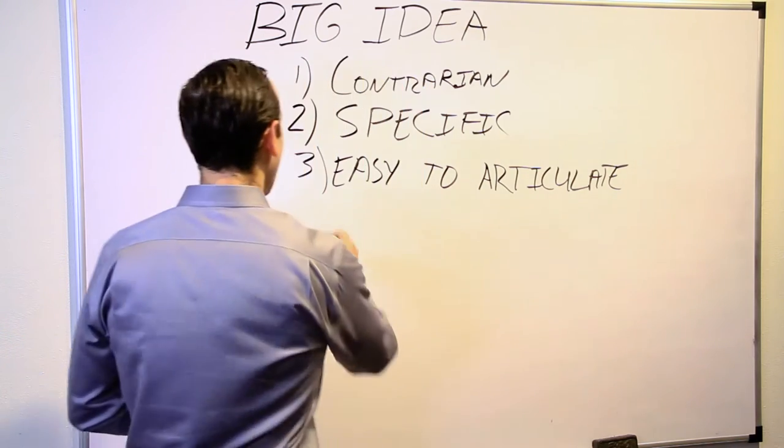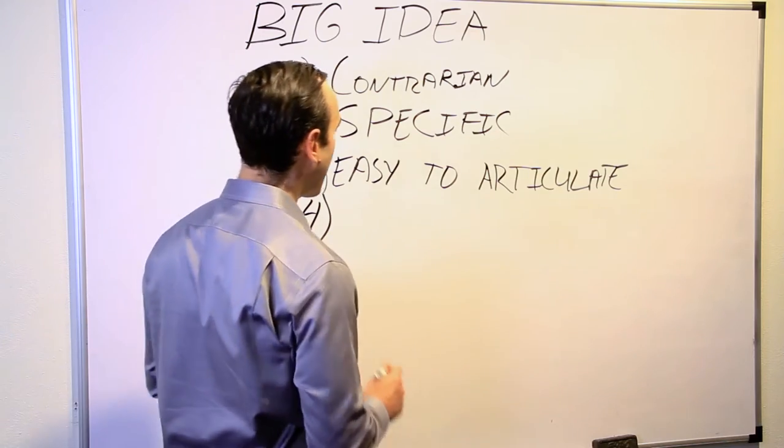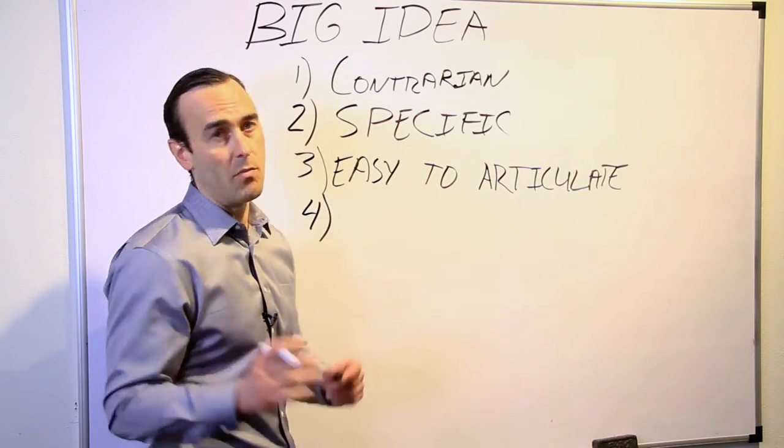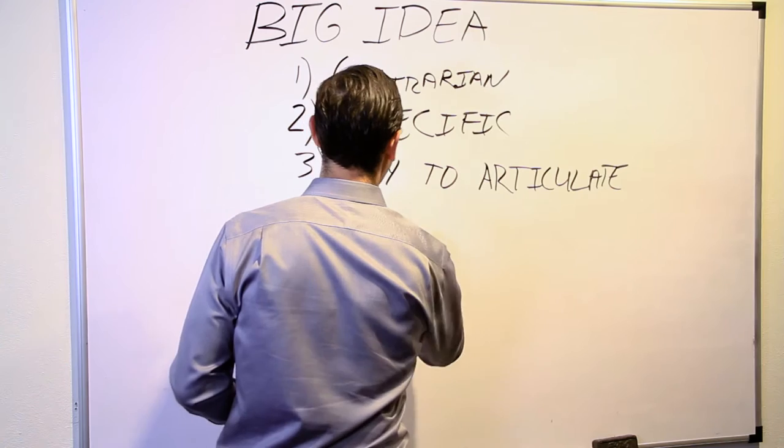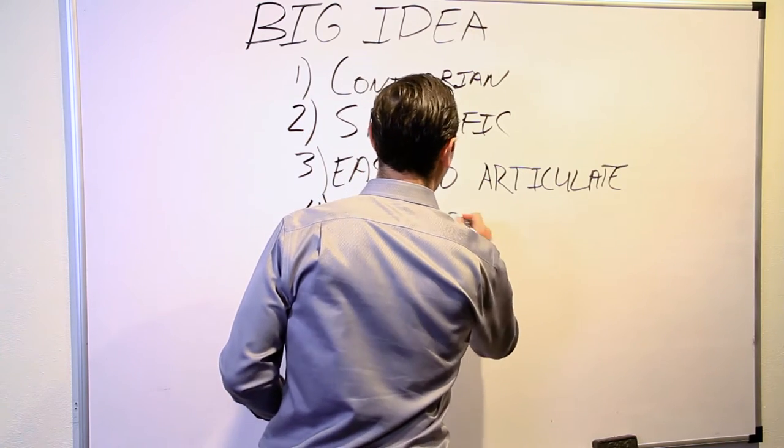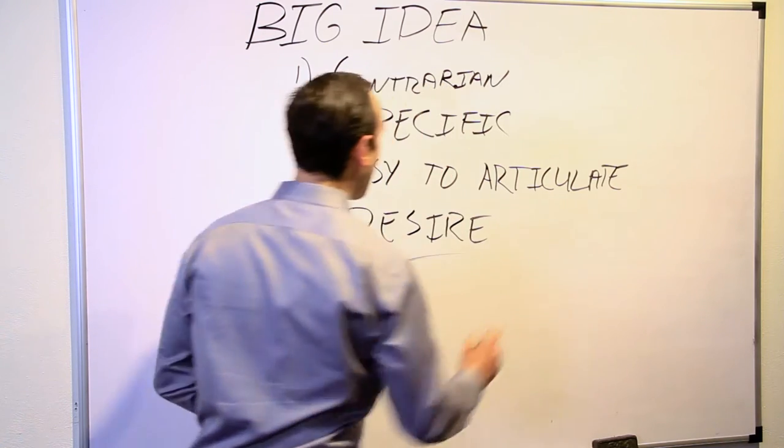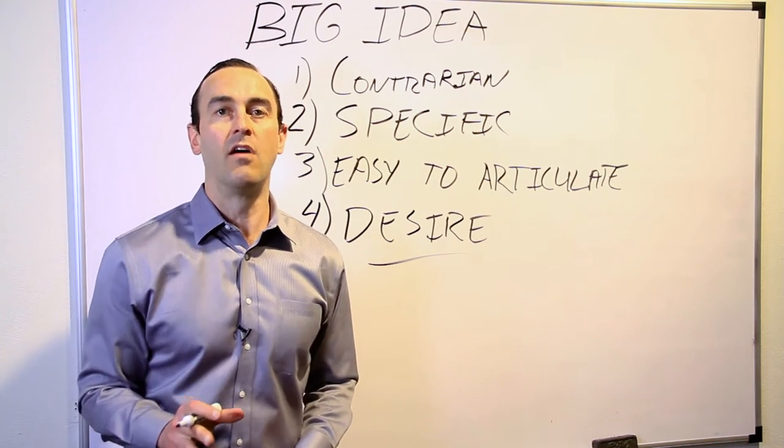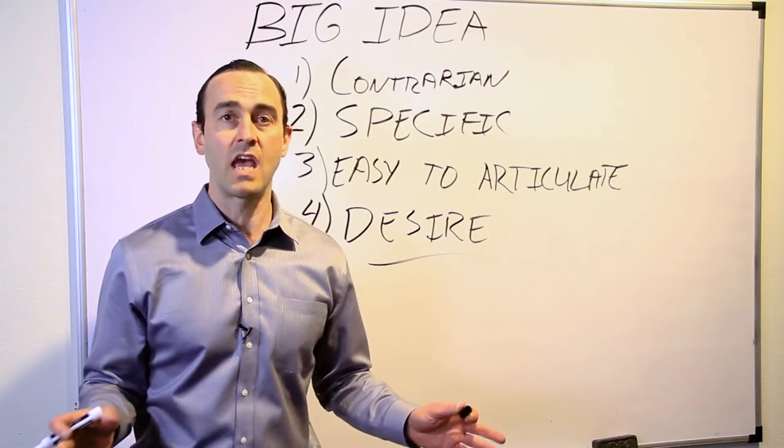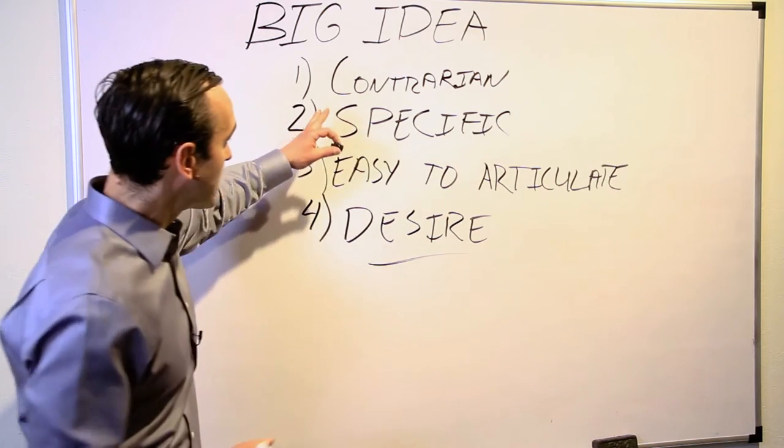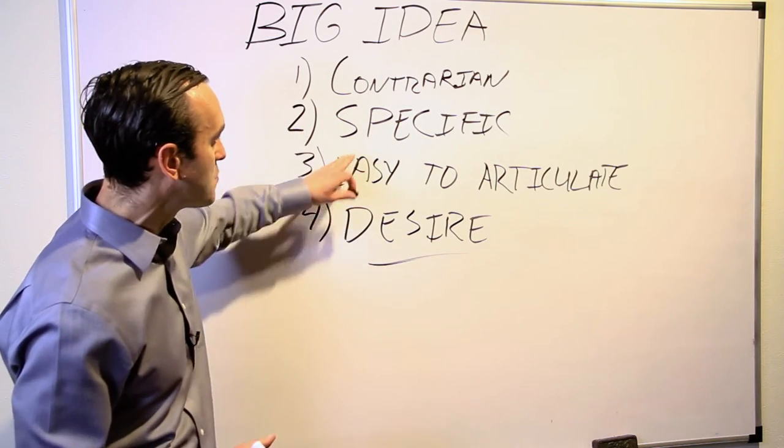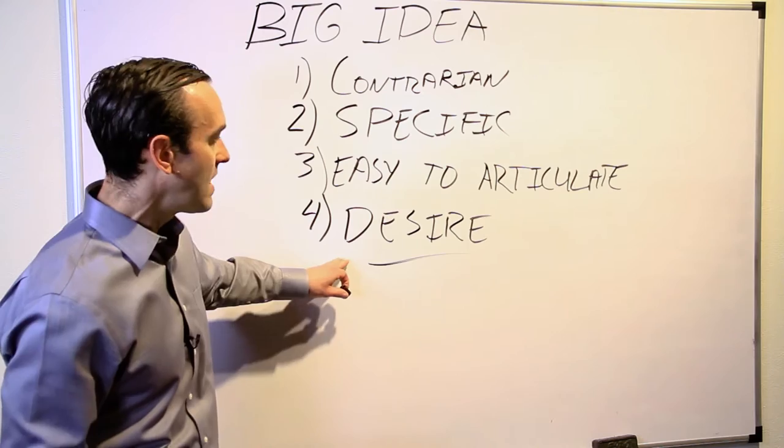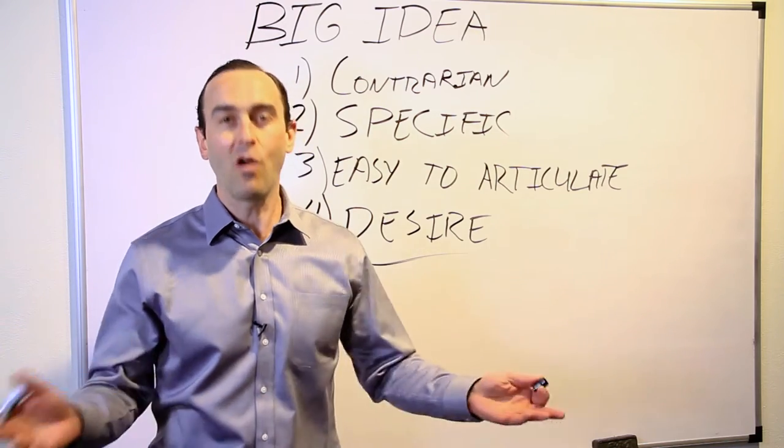And then fourth, you need to have something that is desirable. Desirable. So you have to have people wanting it. Desiring it. So let's think about the biggest idea in books in the last 10 years. What is it? What fits all these categories? Contrarian, specific, easy to articulate, and desirable. The four-hour work week.